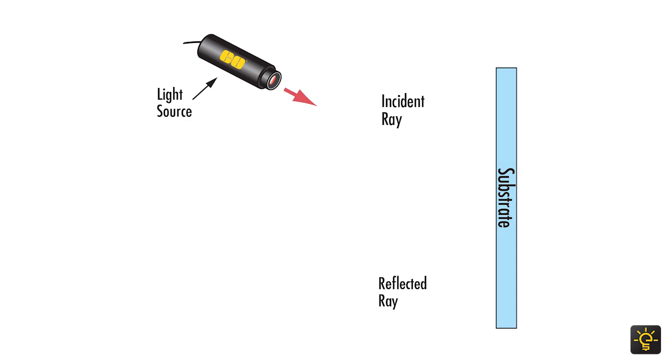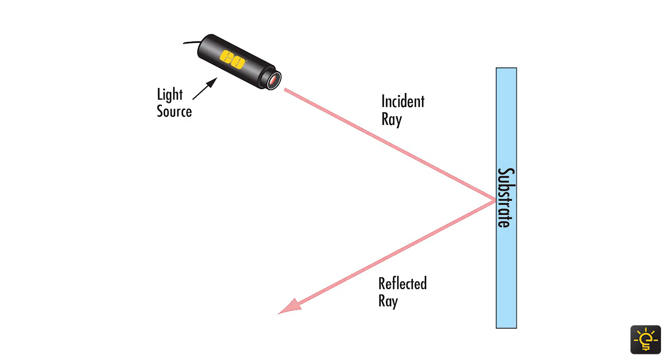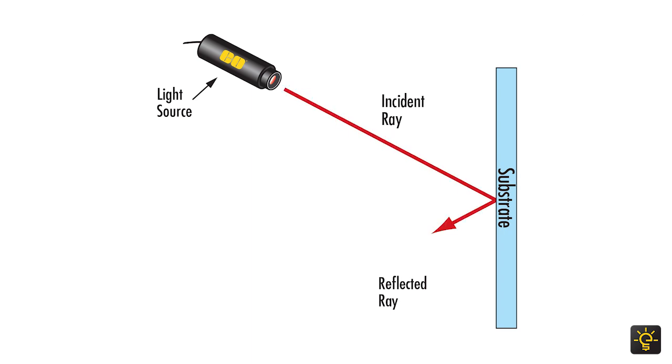As you can see, when the laser hits the mirror, it is reflected. The ray of light that is coming directly from the laser is called the incident ray, and the ray of light that is being reflected off of the mirror is called the reflected ray.